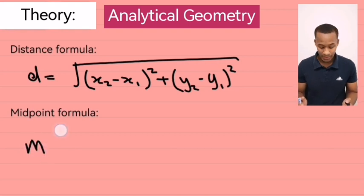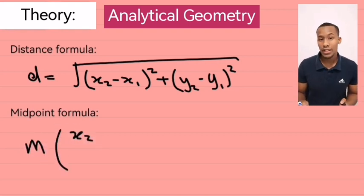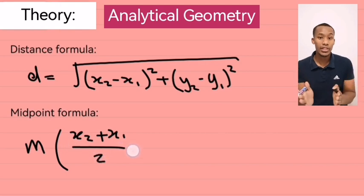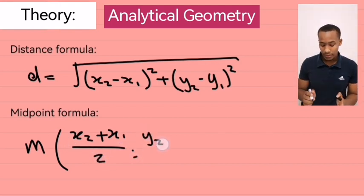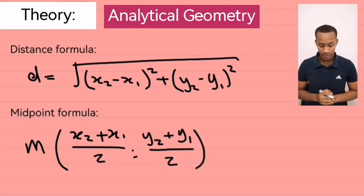The midpoint formula is x2 plus x1 divided by 2. So, you're working out an average for the x's. And y2 plus y1 over 2. Also, working out an average for the y's.